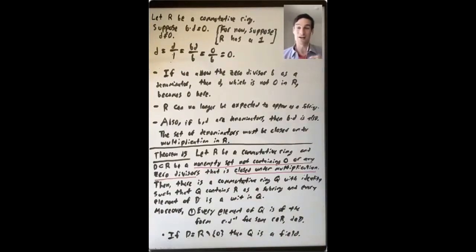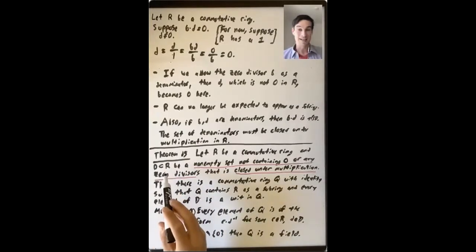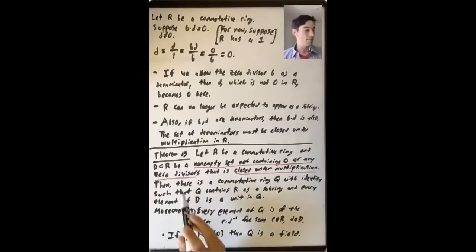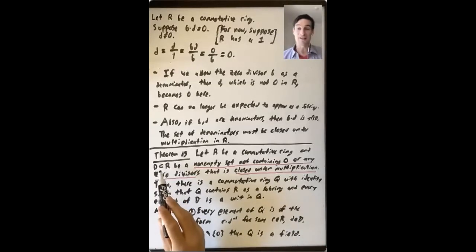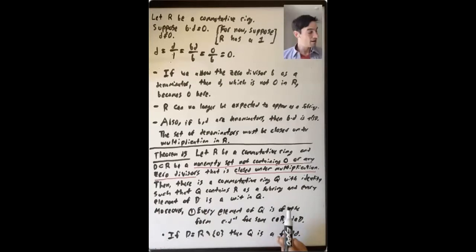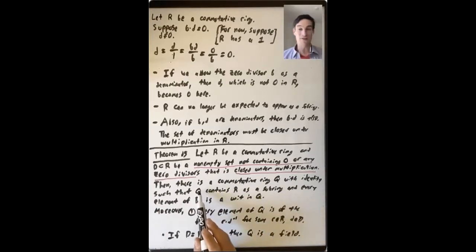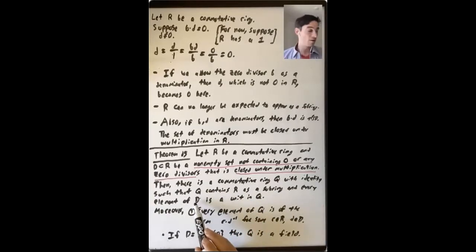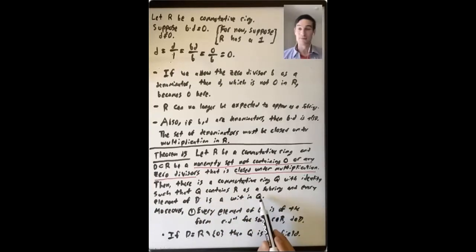Think about the construction with R equal to Z. D in this case — I'll talk about this example more in a minute, but think of D as all the nonzero integers. Then we have Z inside Q as the ordered pairs (a, 1), and all of the nonzero integers — all the (a, 1)s where a is not zero — become units in Q. So this is just like what we've seen already.